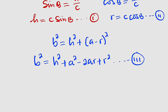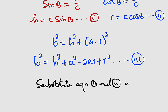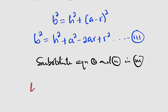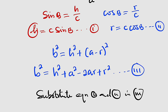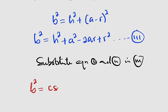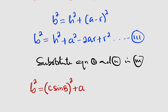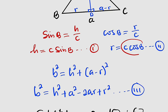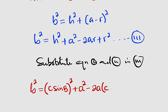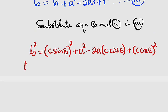Now I would like to substitute equation one and equation two into equation number three. On the left hand side we have b squared. For h squared, since h equals c sine B, we substitute to get c sine B whole squared. For the minus 2ar term, r is c cosine B, giving minus 2a times c cosine B. And for r squared, r is c cosine B, so we get c cosine B whole squared.